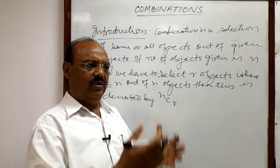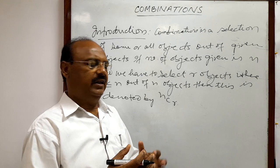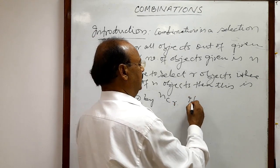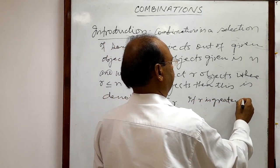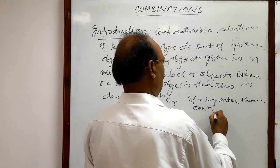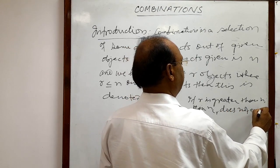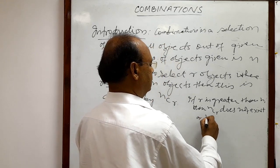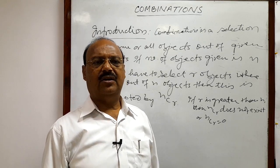r cannot be greater than n because we are making a selection from the given objects, so we cannot select more objects than what is given. If r is greater than n, then nCr does not exist — there is no meaning of nCr, or we write nCr = 0.